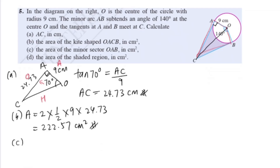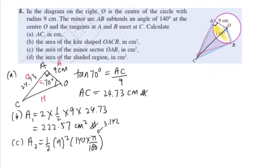For part C, find the area of the minor sector OAB. Area equals half R squared theta. Theta is 140 degrees, but convert to radians: multiply by pi over 180, using 3.142. The radius is 9. Using your calculator you should get 98.97 cm squared. The textbook may give 98.98 — check with your calculator.